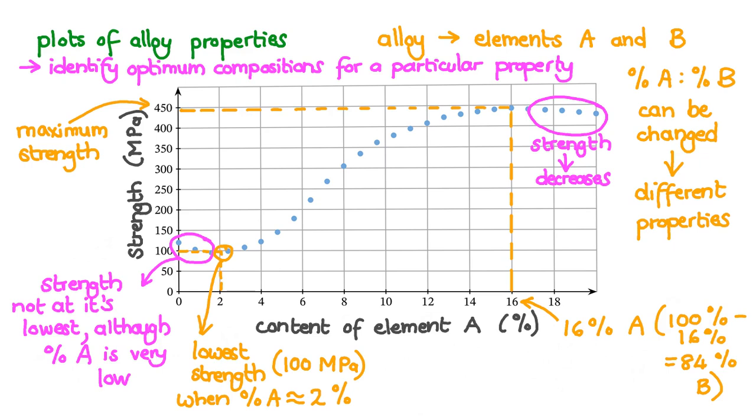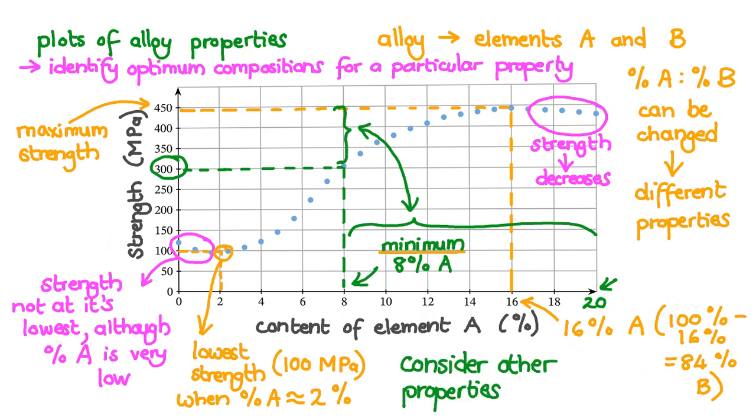Lastly, let's imagine we wanted to make an alloy of elements A and B that had a strength of about 300 MPa. If we go across to the curve and down to the x-axis, we'd need to make our alloy with a minimum of 8% of the element A and the rest element B to achieve this strength. The key word here is minimum. Truthfully, any content of element A from about 8% up to about 20%, which is the maximum content value we've been given on this plot, would give us a strength higher than 300 MPa, more than we needed. It's not necessarily a problem to make an alloy that is stronger than is needed, but we'd need to consider other properties at different strengths, for example brittleness. We'd have to look at a brittleness versus content plot as well. Now it's time to summarize everything that we have learnt.